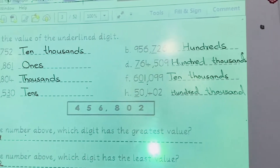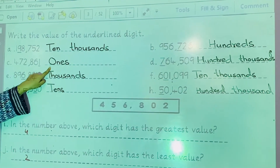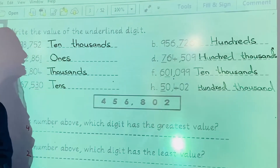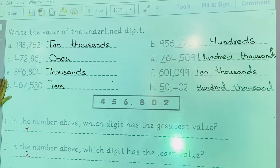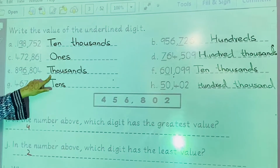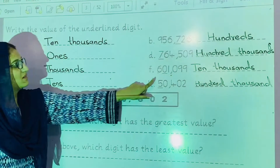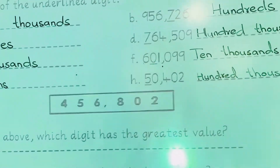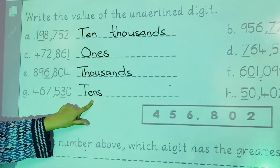In part C, the place value of the first digit is ones. In part D, the place value of seven is hundred thousands. The place value of six is thousands. The place value of zero is ten thousands. The place value of three is tens.